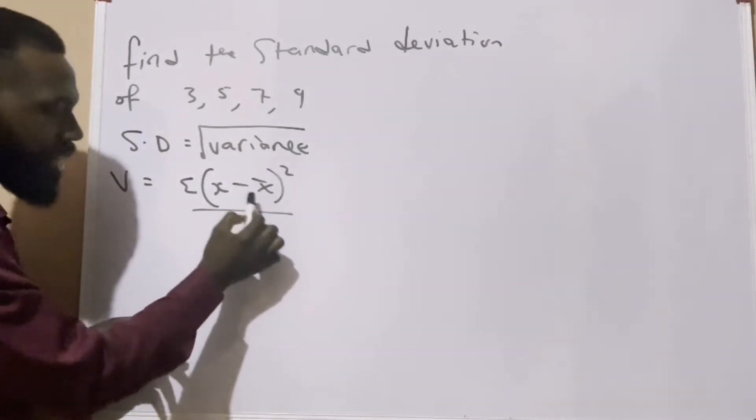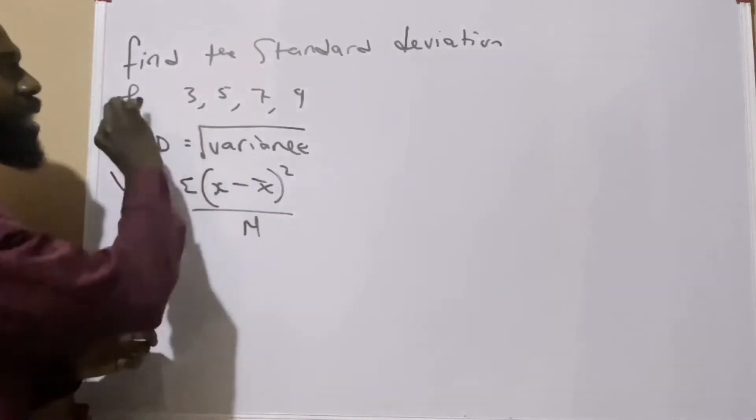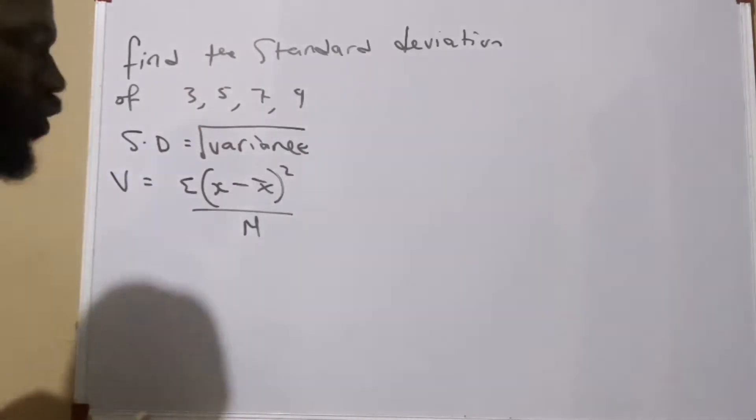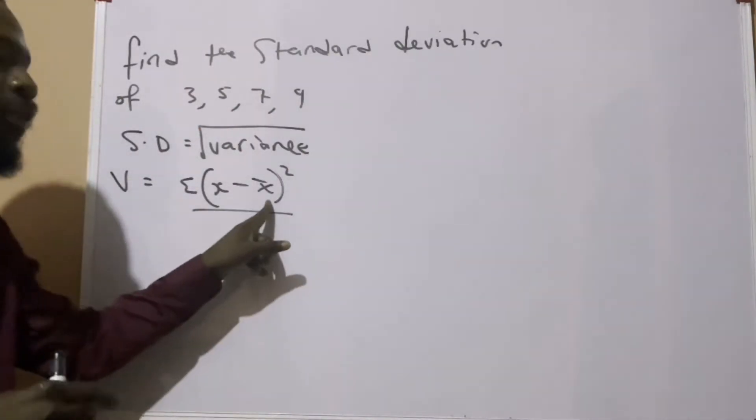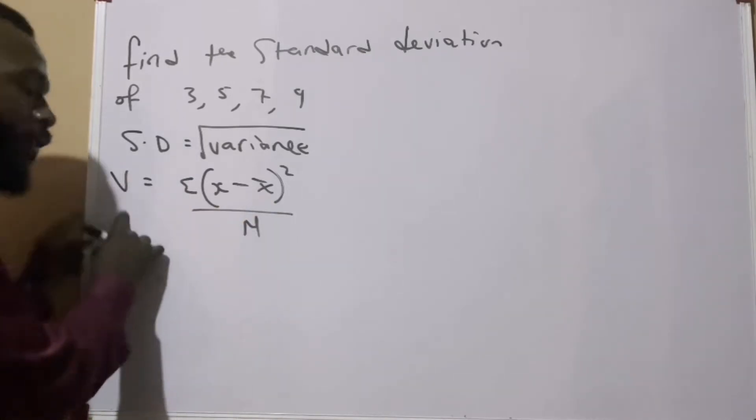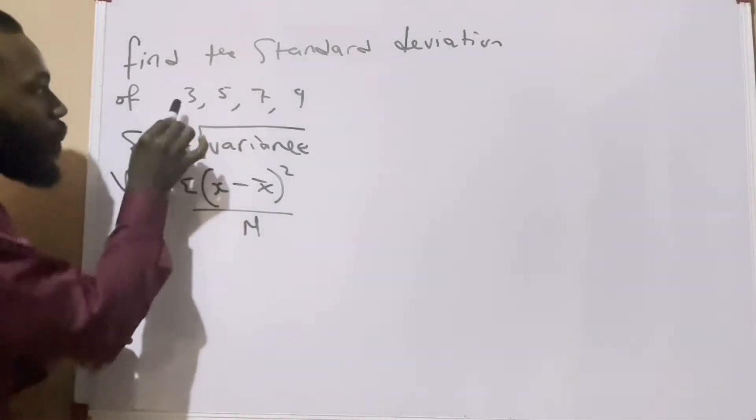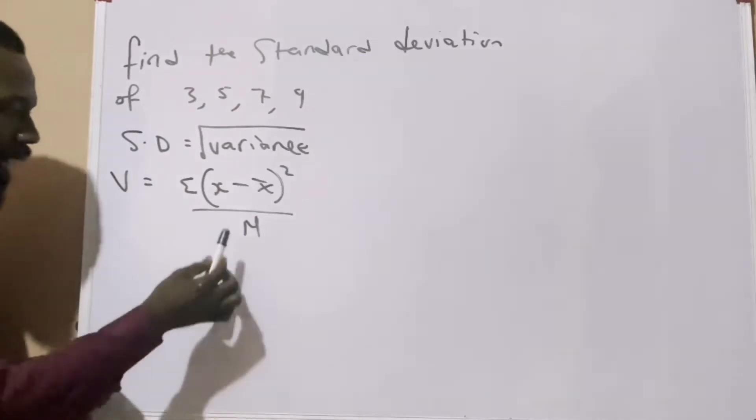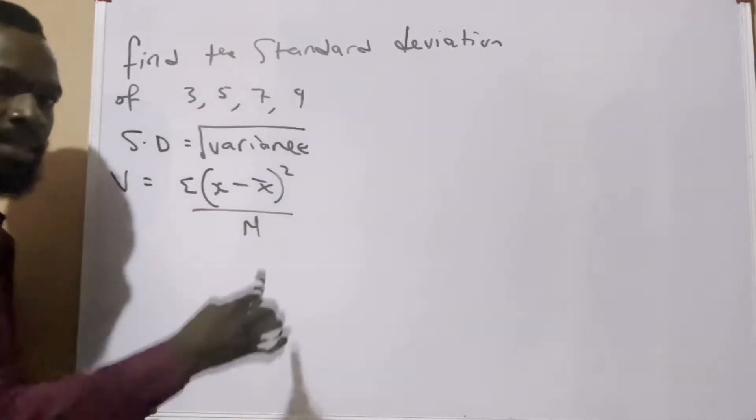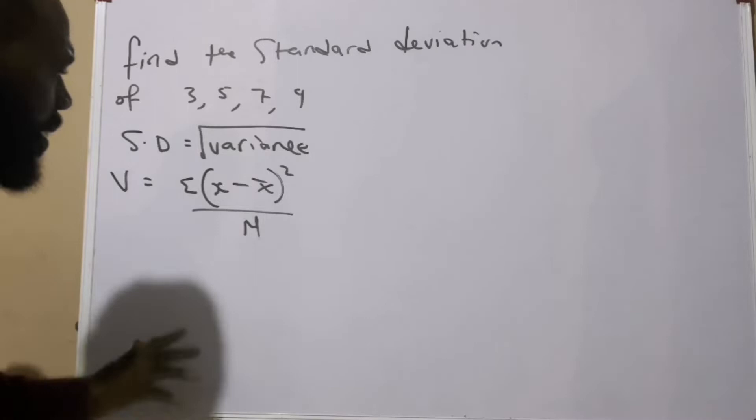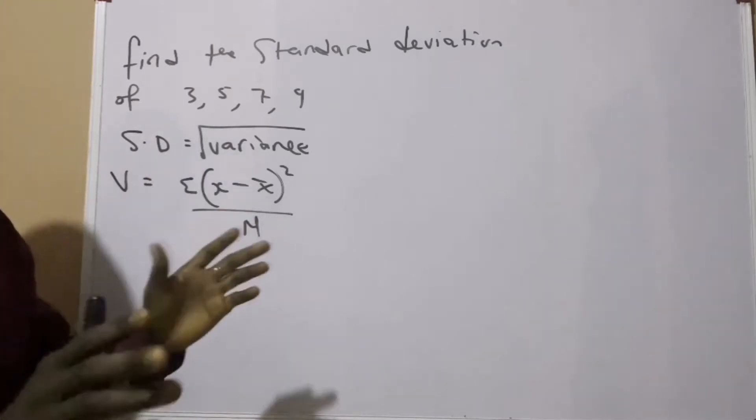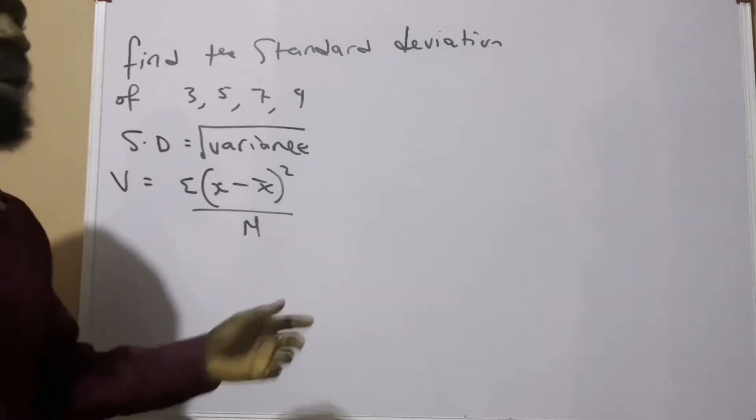So it means if you take a look carefully at the formula for variance, you will see we have the arithmetic mean in it. But in the question, the mean was not given, so it means we also need to solve for the mean for us to be able to solve the variance. Because x here represents the set of data that is given, and n here represents how many data are given.